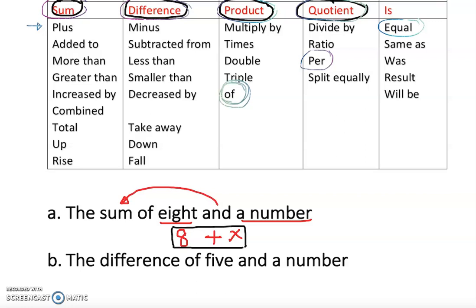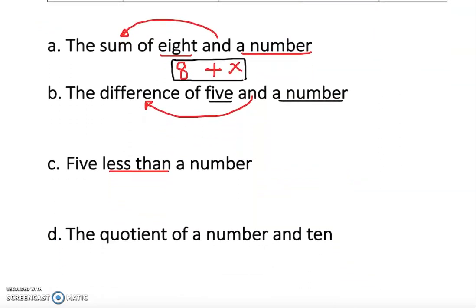Next example: 'the difference of 5 and a number.' The word 'difference' tells you to subtract — not add. So you write 5 minus x, or 5 minus n — any letter is fine. That is your answer. Remember, 'difference' is not telling you to add; it's referring to subtraction.